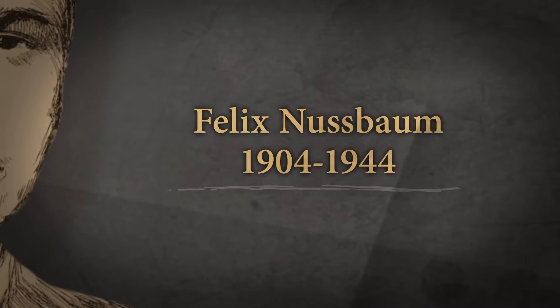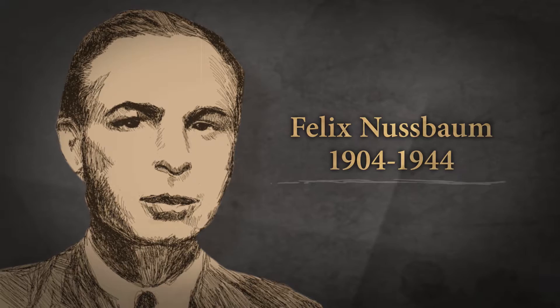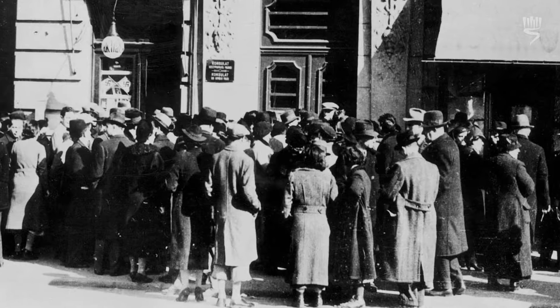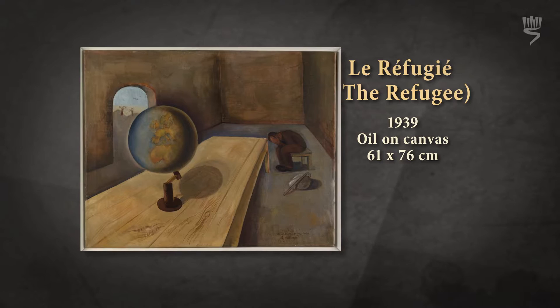Felix Nussbaum was a German Jewish artist who became a refugee in Belgium after the Nazis came to power in 1933. On the eve of World War II, most countries in the world refused to accept Jewish refugees. Nussbaum painted The Refugee as a way to demonstrate his plight as a Jew who had no place to go.